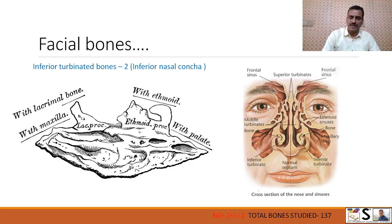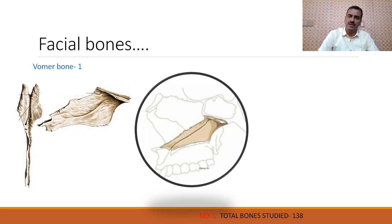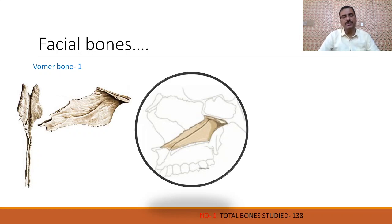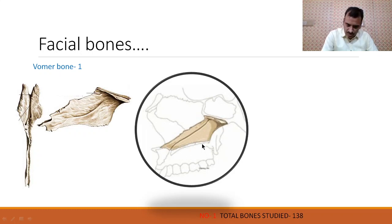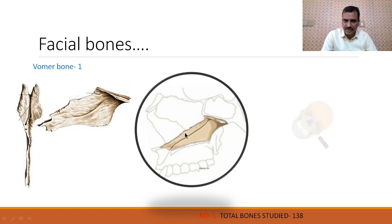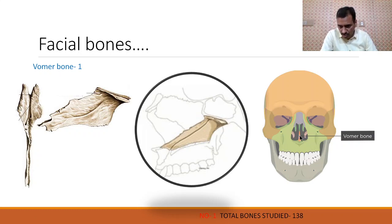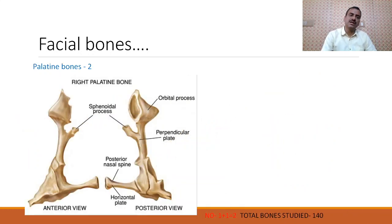Next bone is the vomer. The vomer is only one bone; it is also a flat bone and it forms part of the nasal septum — specifically the posterior part of the nasal septum. Here you can see its location inside the nasal cavity. This is the vomer bone in side view and this is the upper view. Here you can see the vomer bone from the front in the skull.